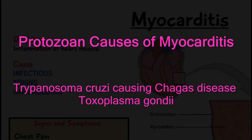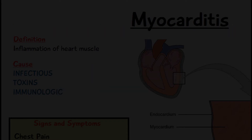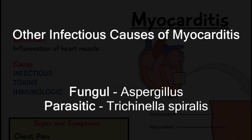Other causes can be protozoan, such as Trypanosoma cruzi which causes Chagas disease, or Toxoplasma gondii which is from cats. A bacterial infection can also cause myocarditis, such as from the Brucella bacteria or Mycoplasma pneumoniae. A fungal infection could also be another cause, from Aspergillus, or it could be from a parasite like Trichinella spiralis.